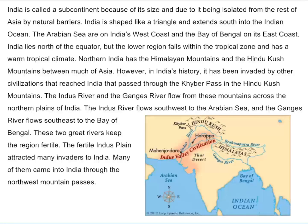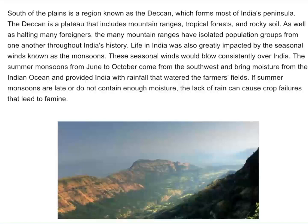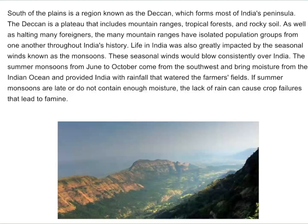The Indus River and the Ganges River flow from these mountains across the northern plains of India. The Indus River flows southwest to the Arabian Sea and the Ganges River flows southeast to the Bay of Bengal. These two great rivers keep the region fertile. The fertile Indus plain attracted many invaders to India, many of them coming through the northwest mountain passes. South of the plains is a region known as the Dekan, which forms most of India's peninsula. The Dekan is a plateau that includes mountain ranges, tropical forests, and rocky soil. The many mountain ranges have isolated population groups from one another throughout India's history.